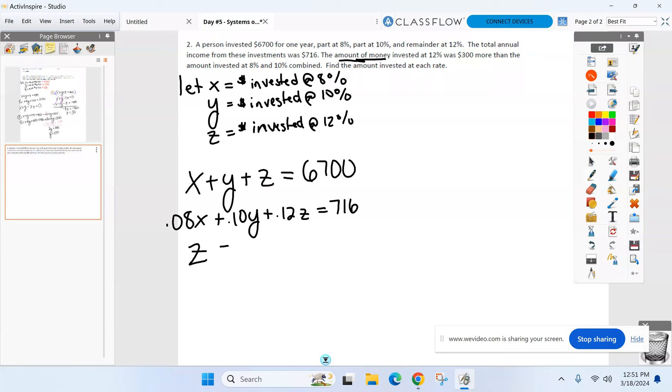Was, is equal to. What do you got for me? 300 more than the amount we invested at 8 and 10 combined. What am I putting at the other side of this equal sign here? X plus Y, which is the 8 and 10 combined, plus 300, the amount of money invested at 12%. We called Z. So that's why there's a Z there. Was equal to the amount combined of the 10 and the 8, 300 more than that. So I could have put the 300 first if anybody's freaking out. I could have put 300 plus X plus Y.